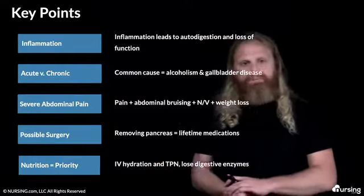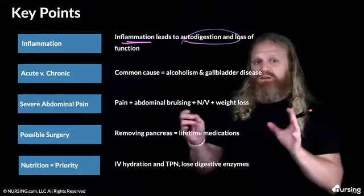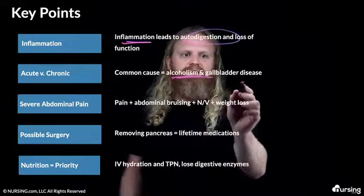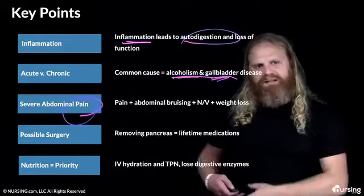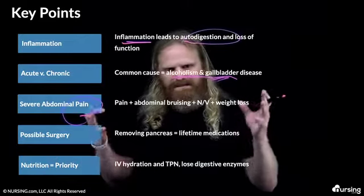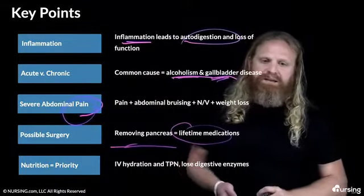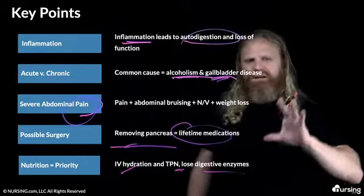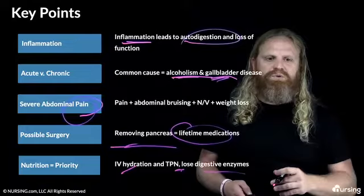Key points: pancreatitis is inflammation of the pancreas that can lead to autodigestion and loss of function. It can be acute — possibly resolving on its own — or chronic, which won't resolve. Most often caused by alcoholism or gallbladder disease. It is extremely painful; remember Cullen's sign (abdominal bruising) and Grey Turner sign (flank bruising), plus nausea, vomiting, and weight loss. Possible surgery includes removing the pancreas, but that equals lifetime medications. Nutrition is a huge priority — IV hydration, TPN, and replacement of digestive enzymes.